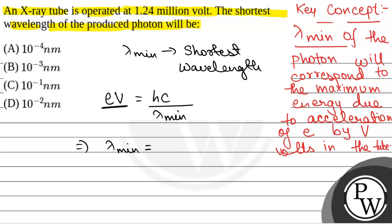We will have lambda min that is equal to hc by E into V. The value of hc by E in electron volt nanometer is 1240. So 1240 by 1.24 million volt, that is equal to 1.24 into 10 to power 6 volt, and that multiplied by E will give 1.24 into 10 to power 6 electron volt.